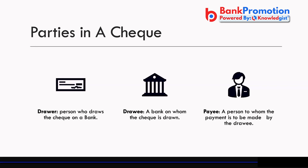When I sign a cheque, I am the drawer. The bank — say Bank of India — is the drawee. The person directed to be paid, say Mr. Yogesh for ₹5 lakh, is the payee. I have directed State Bank of India to pay Mr. Yogesh — that is a cheque.